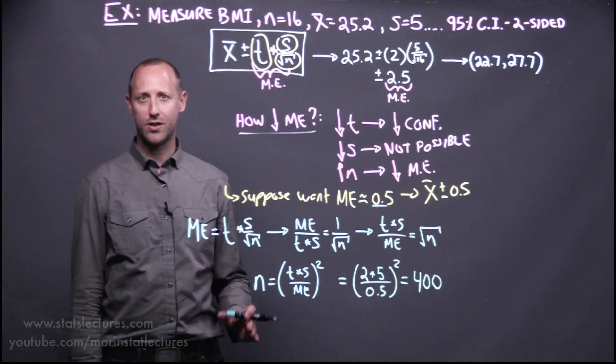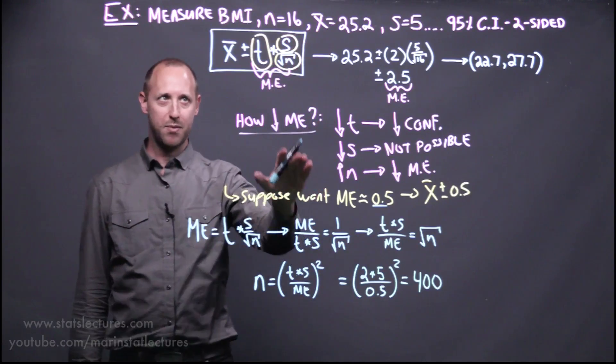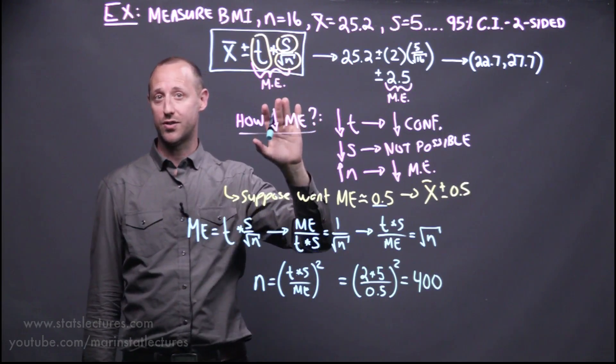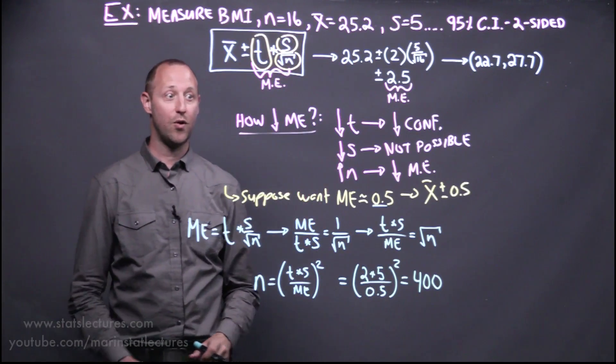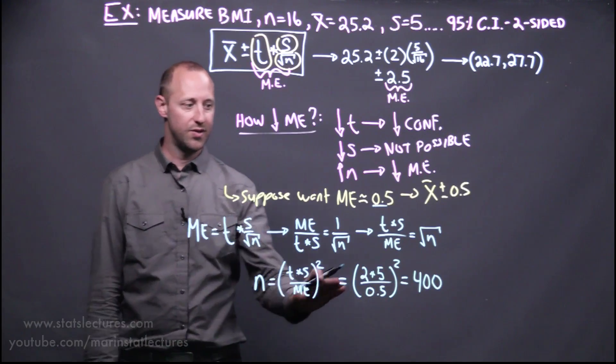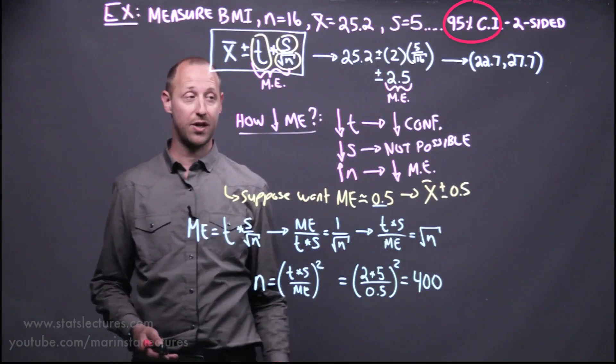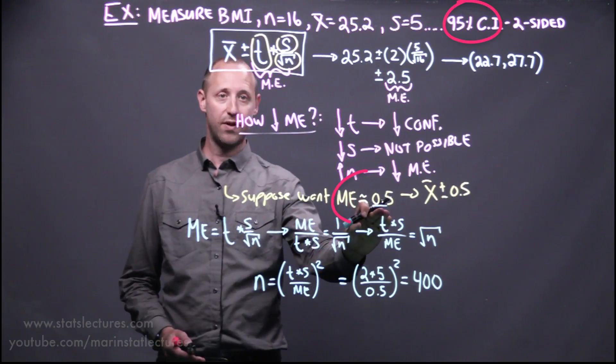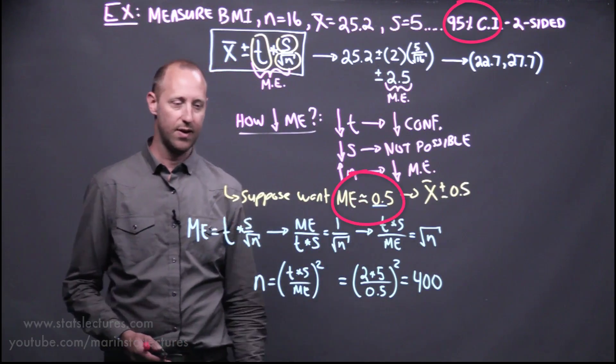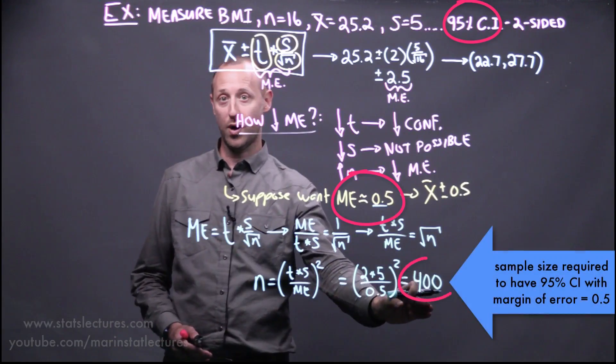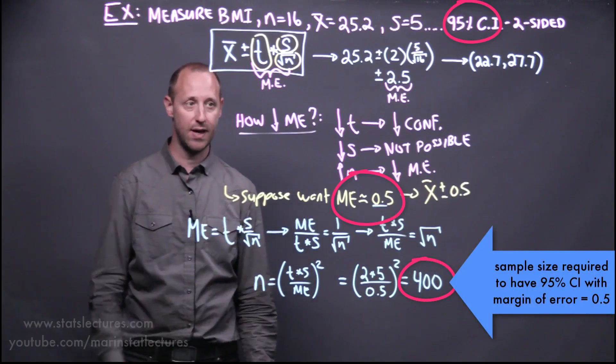And again, as noted in earlier videos, I usually choose simple examples with simple numbers so we don't get distracted by calculations and we can focus on the concepts. So now we know if we want to have a 95% confidence interval with a margin of error of approximately 0.5, we need to take about 400, a sample of size 400, in order to achieve that.